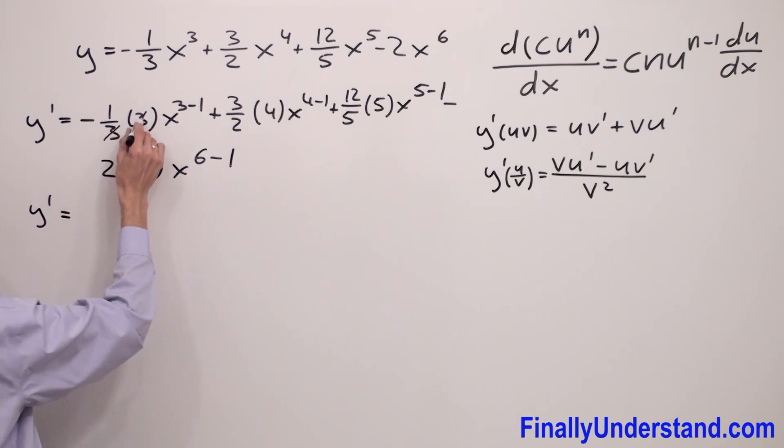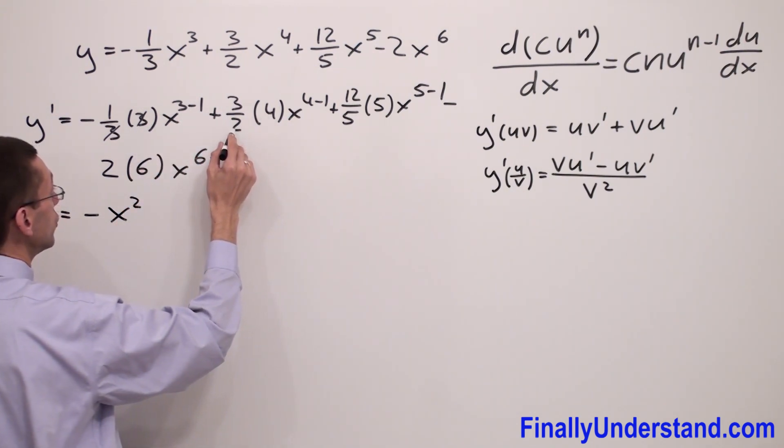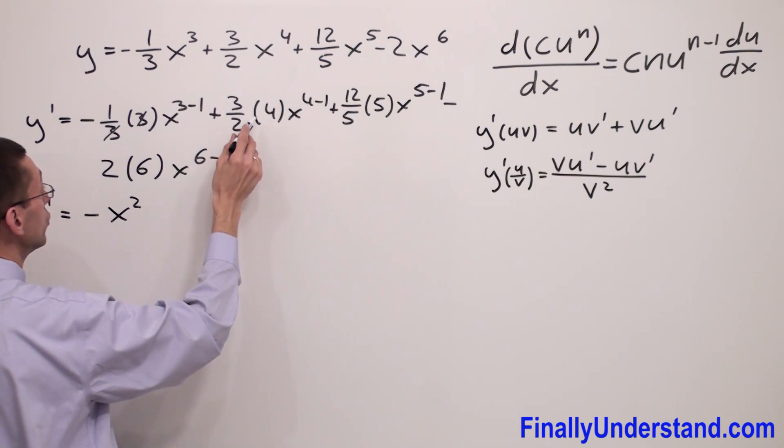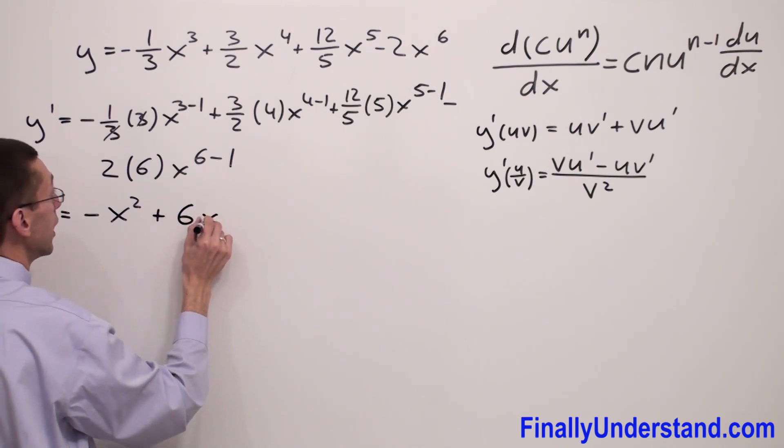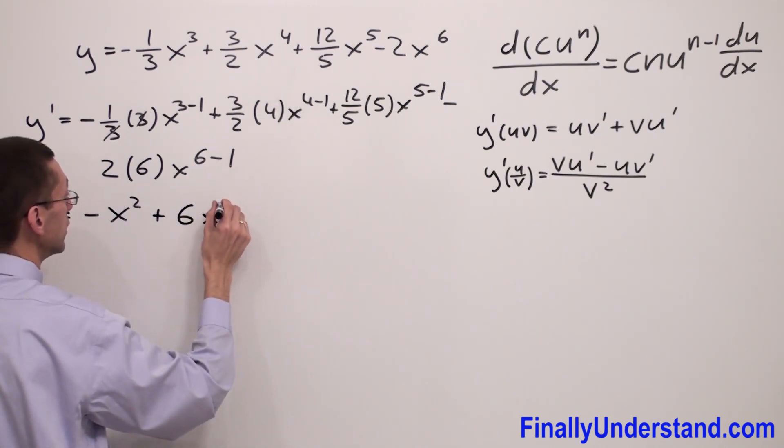3 and 3 will cancel out, so I have negative x squared, since 3 minus 1 equals 2. Then 4 divided by 2 is 2, 2 times 3 is 6, so I have plus 6x cubed, since 4 minus 1 is 3.